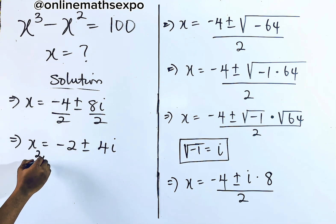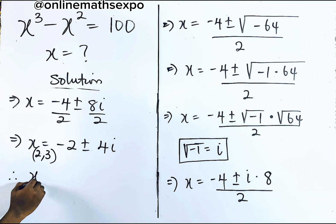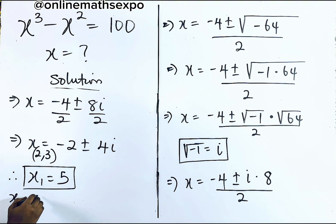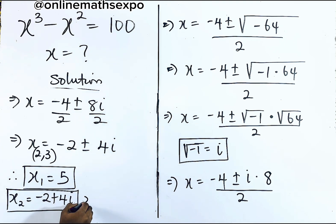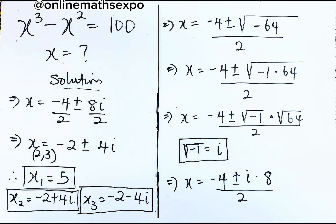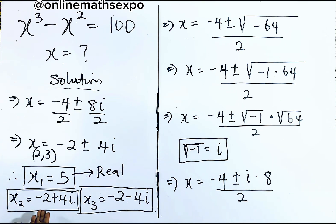So the second value of x is negative 2 plus 4i and the third value is negative 2 minus 4i. These are the three solutions for this cubic equation. x equals 5 is the real solution, visible on a number line, while the other two are complex solutions containing both real and imaginary parts.